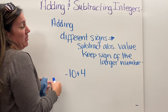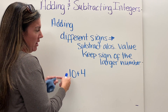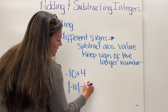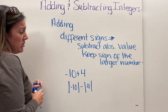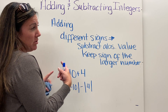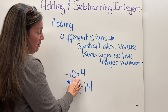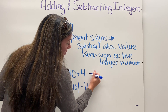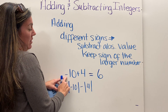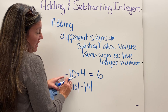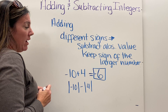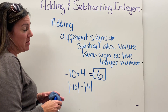I subtract their absolute values: the absolute value of negative ten is ten, and the absolute value of four is four, so I'm thinking about ten minus four. Ten minus four is six, and because the larger absolute value belongs to the negative number, my answer is negative six.